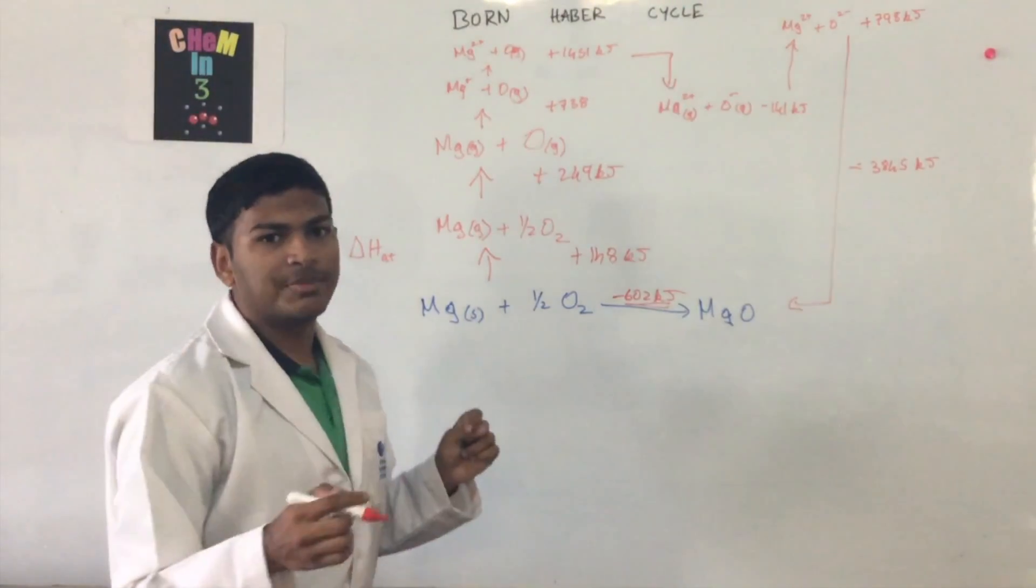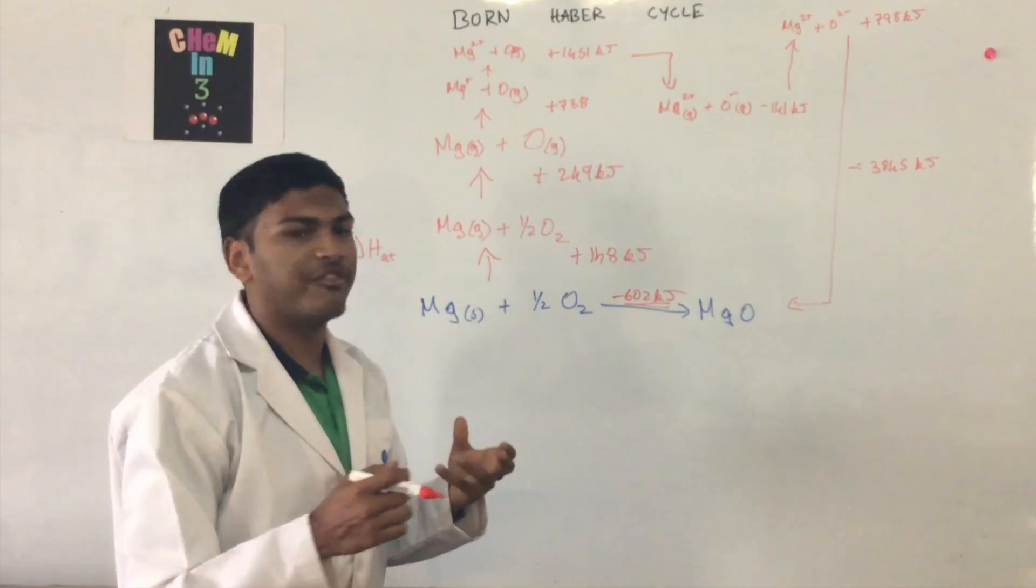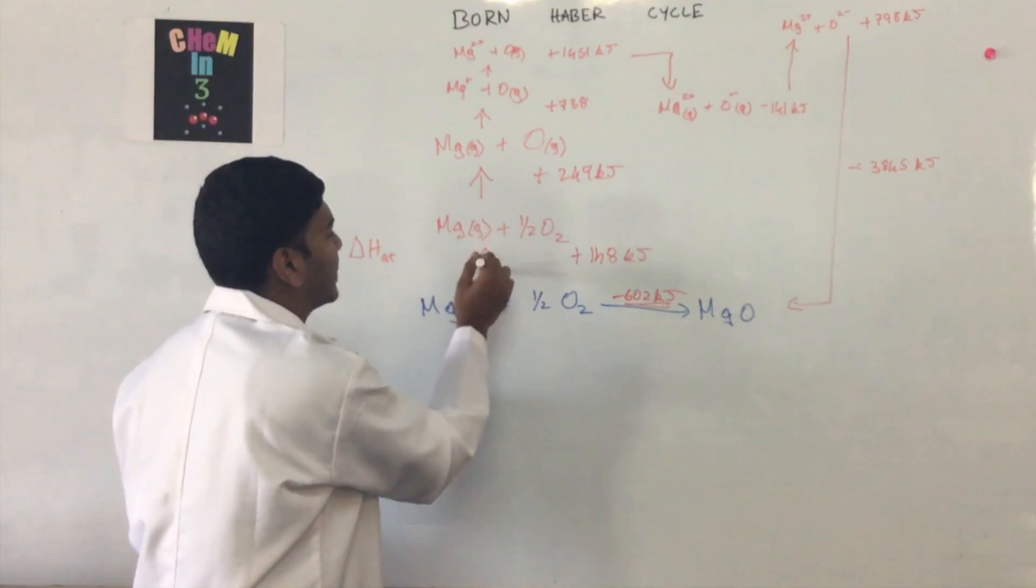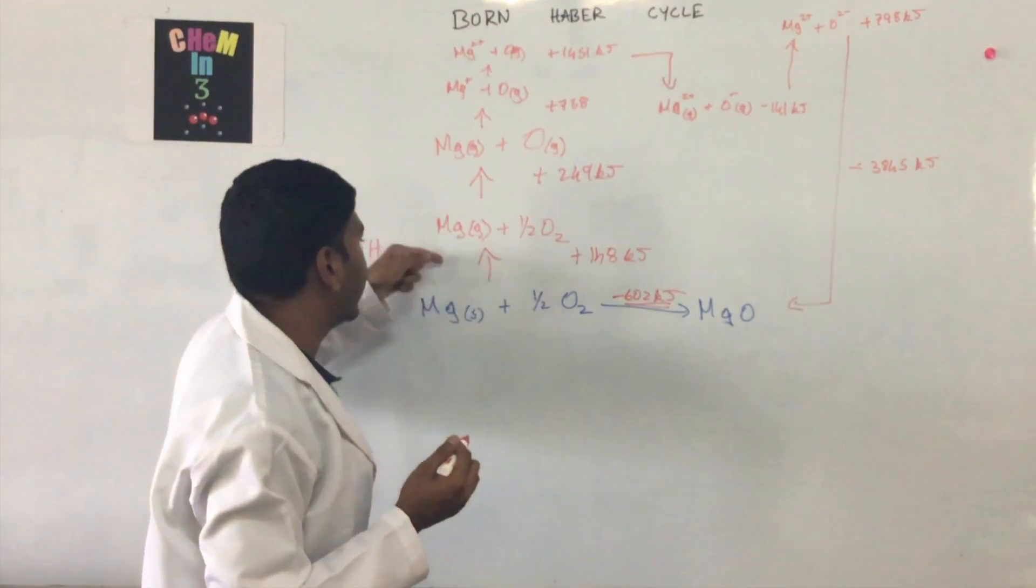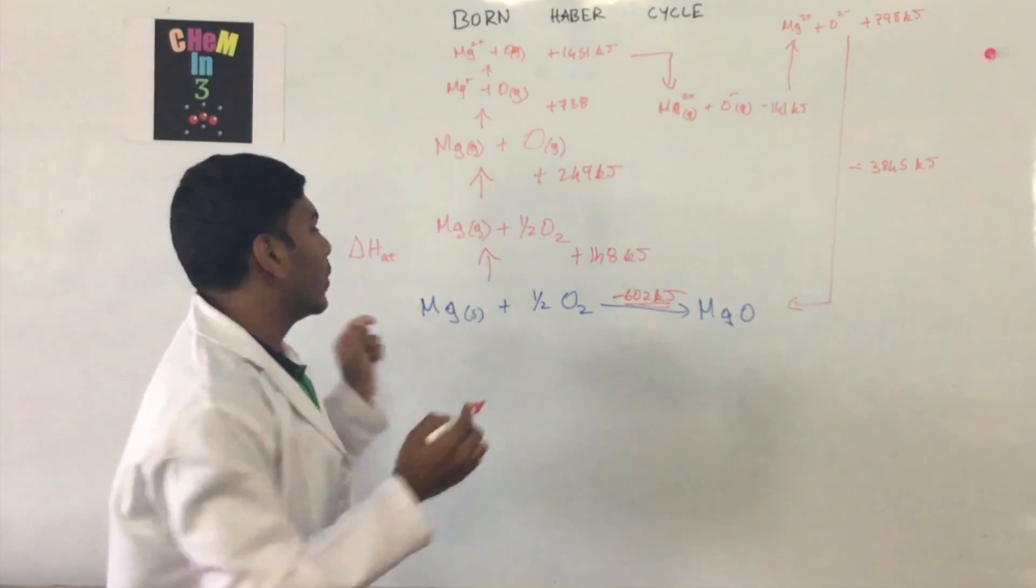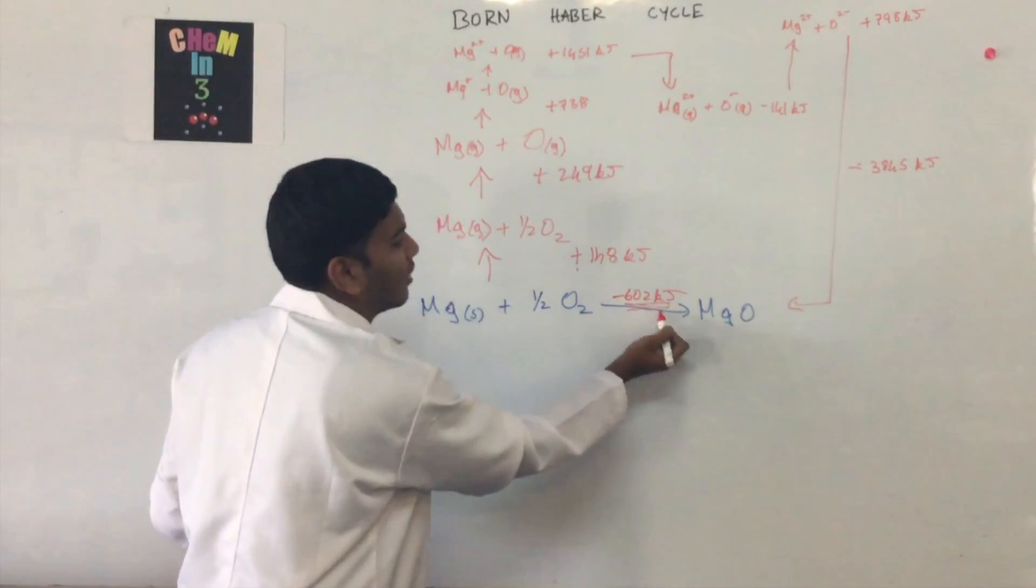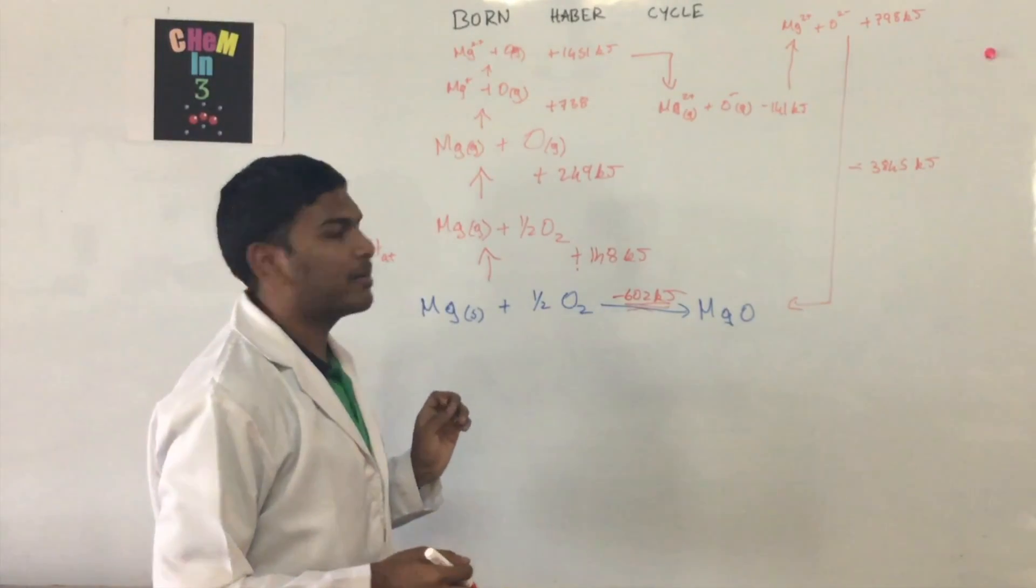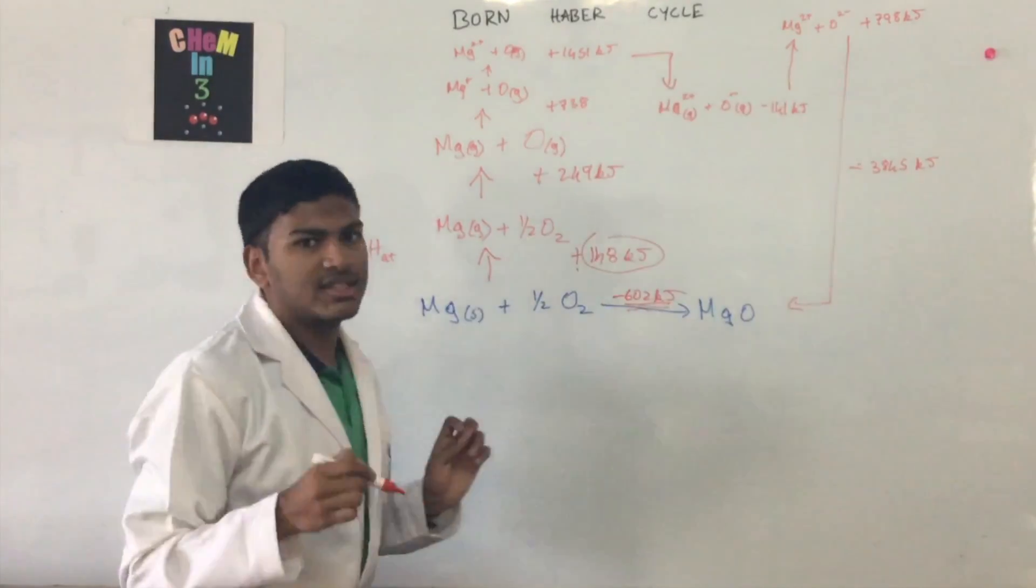So this is especially used in places where you really don't know or you can't find out something like how much energy it takes to isolate one atom of magnesium and atomize it to its gaseous state. We can find this value by burning magnesium and then using the other values to actually find this or any other value in this cycle.